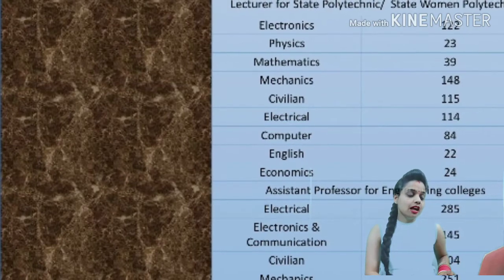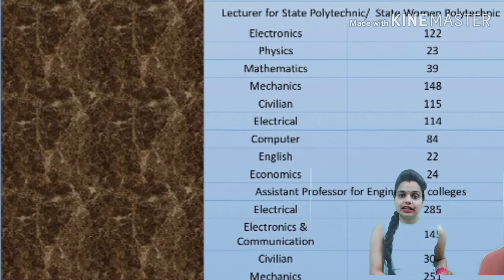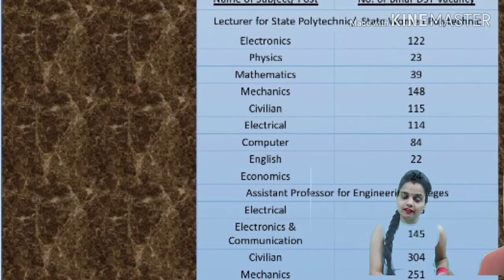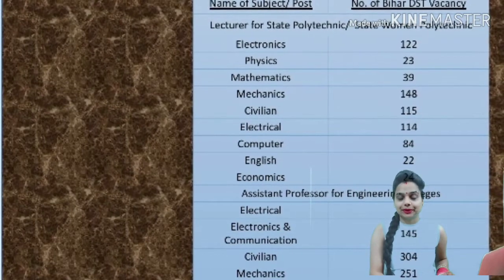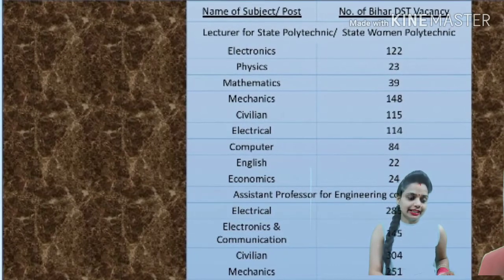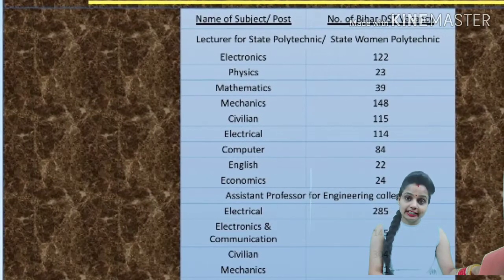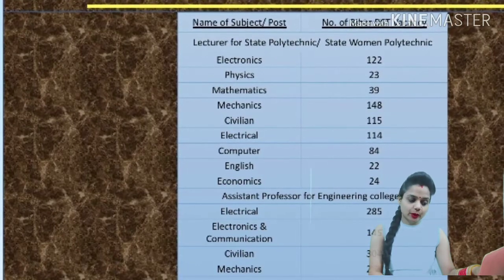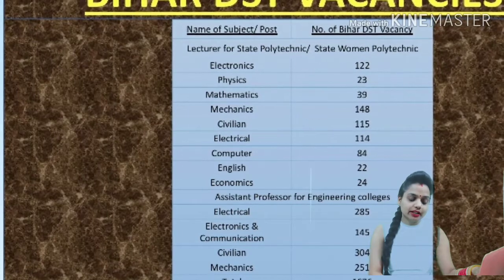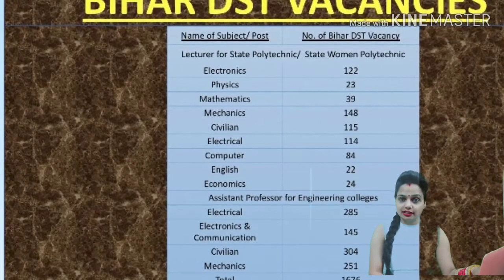In the overview, I'll show you the Bihar vacancies - which subjects and how many vacancies are available. You can see a table on screen showing the name of the subject or post and the number of vacancies required. For Lecturers at State Polytechnic and State Women's Polytechnic: Electronics has 122 vacancies, Physics 23, Mathematics 148, Civil 115, Electrical 114, Computer 84, English 22, and Economics 24 vacancies.